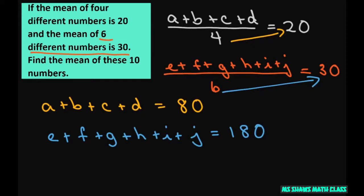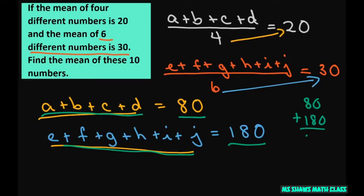Now what I'm going to do is find the mean of these numbers. So I already know that these four numbers add up to 80 and these add up to 180. So if I add them all together, this will be 80 plus 180 is 260.